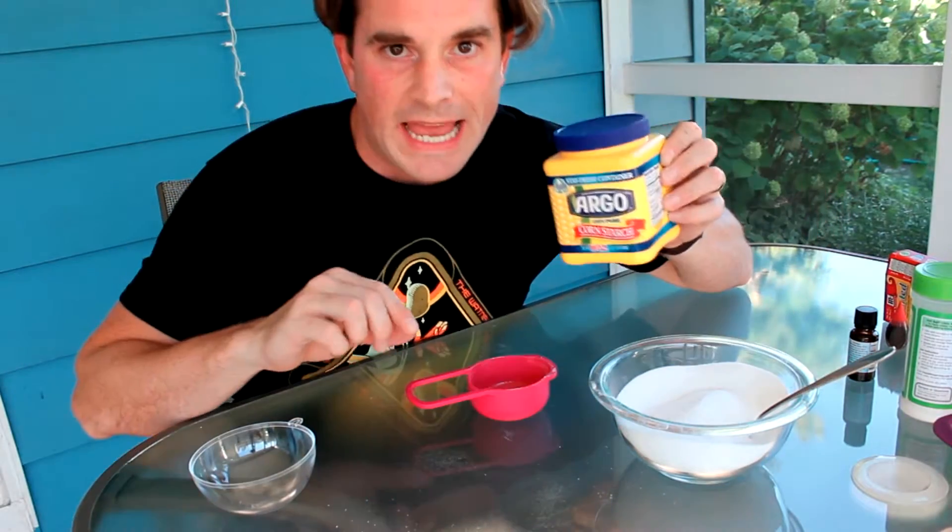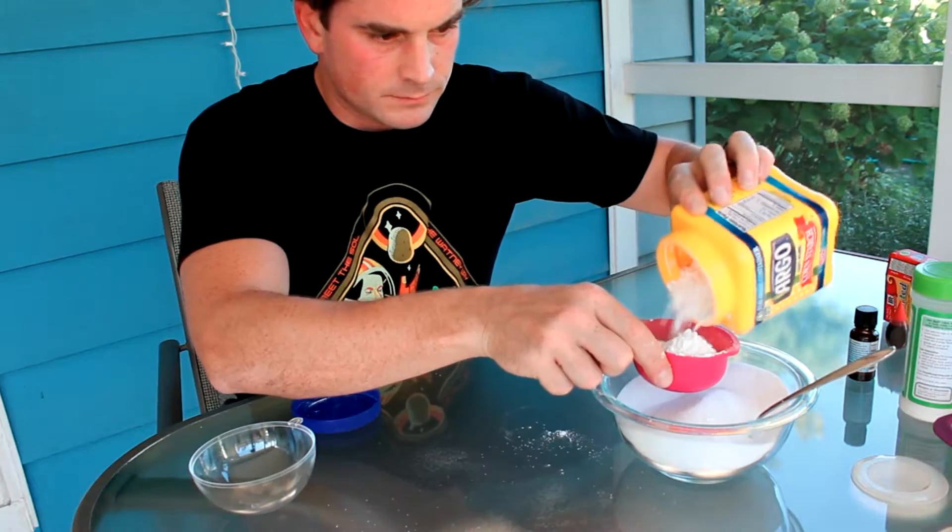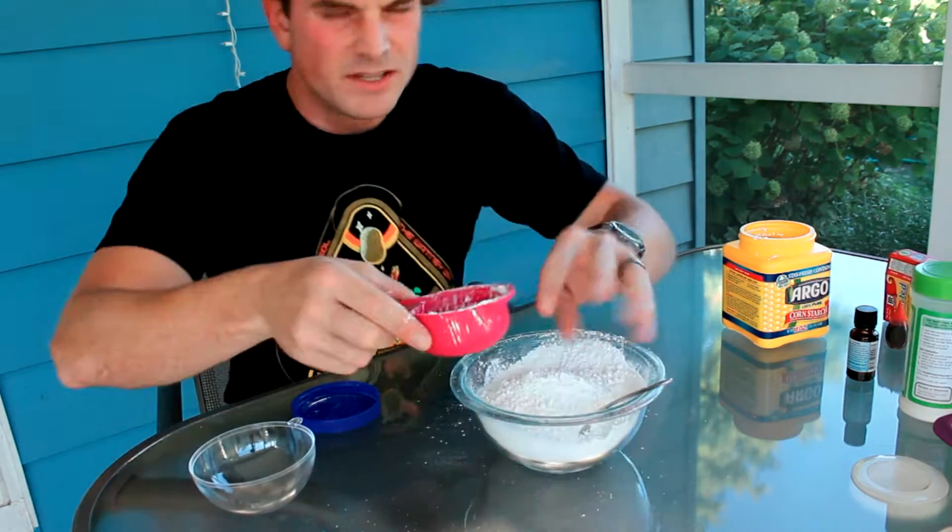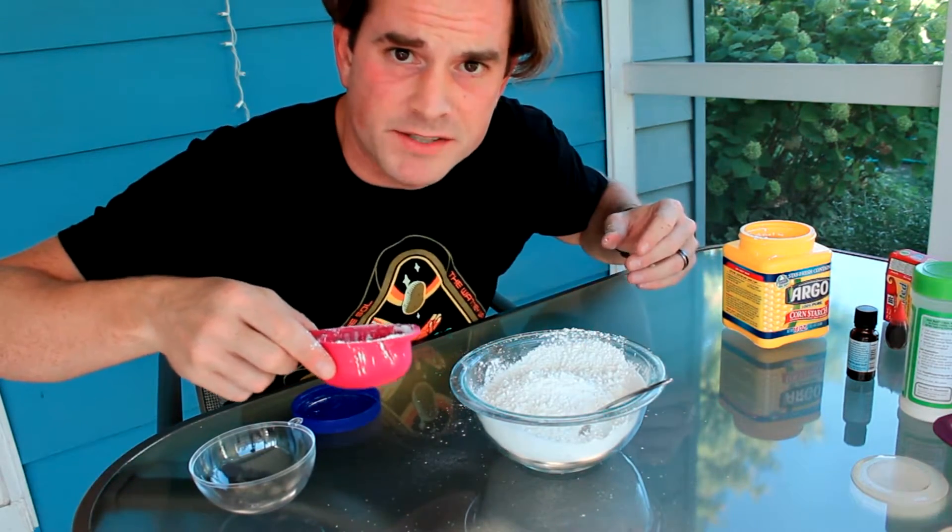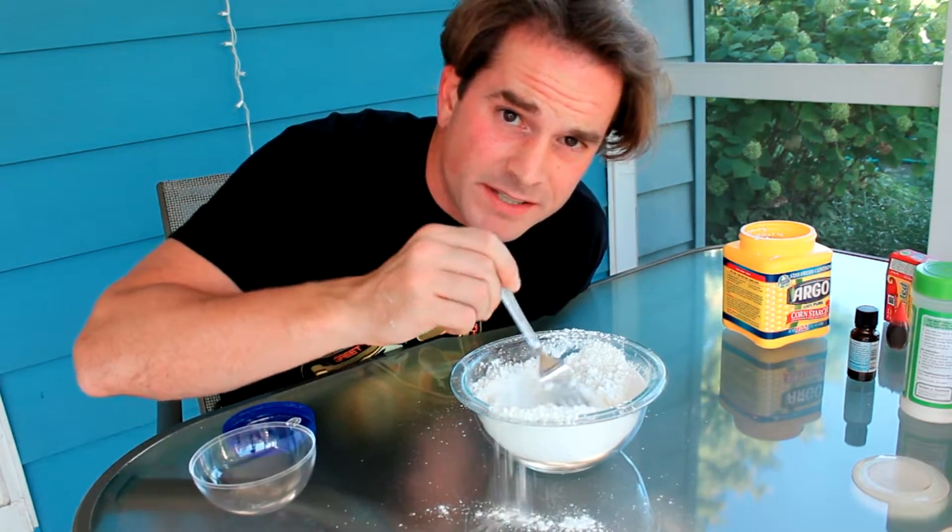Next, cornstarch. And however much citric acid you used, that's the same dry volume of cornstarch you want. So for me, half a cup. Usually around the cornstarch is when things start to get messy. Now, mix some more. I can't stress this enough. The mixing is so important.